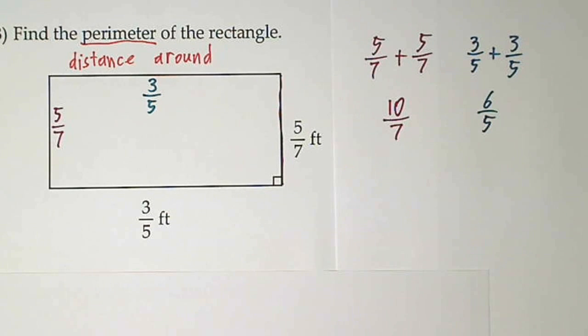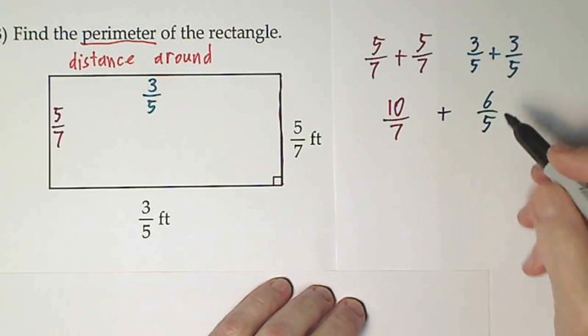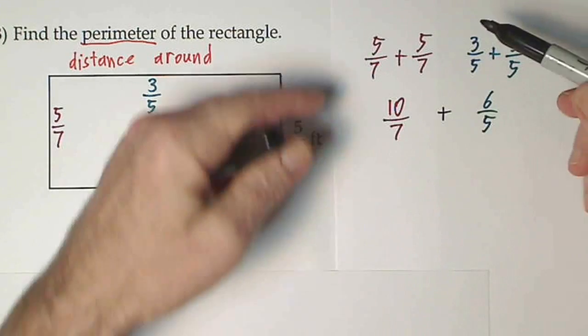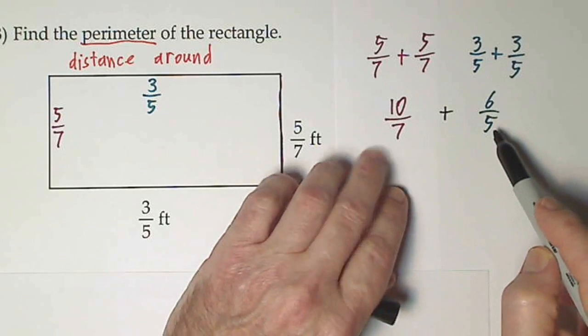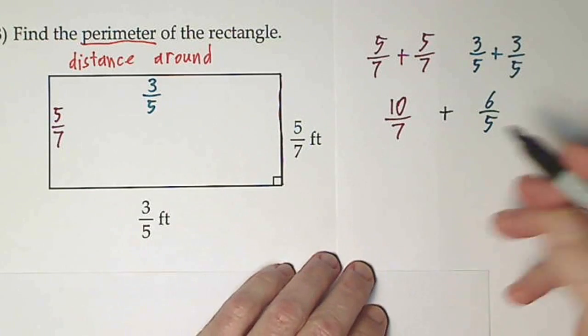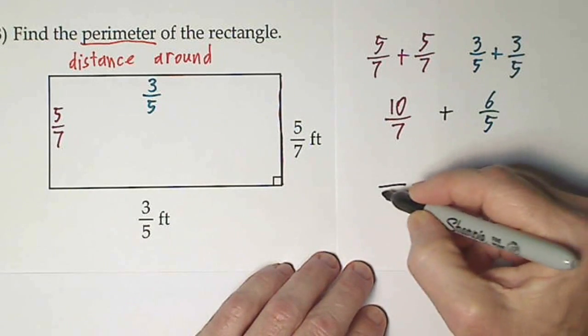And we're trying to add these two, because we have to add all four. So instead of dealing with all four, I just combine these two, combine these two. And now we'll need a common denominator. It's going to be 35.